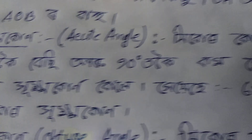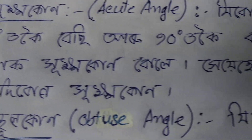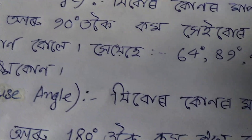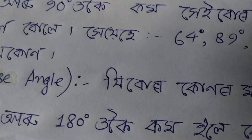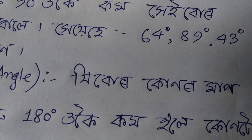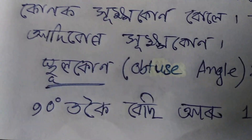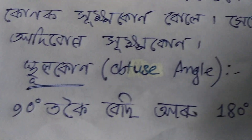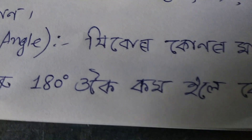The map is 0 degrees and 90 degrees, and it is less than 80 degrees. The map is 64 degrees, 89 degrees, and 43 degrees. The map is 90 degrees, and it is less than 80 degrees.